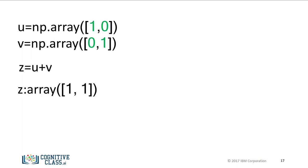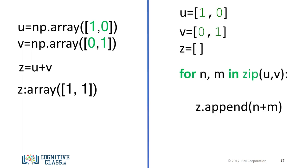The three lines of code to add two lists can be replaced with just one line of NumPy code for vector addition. NumPy also runs much faster, which is important if you have lots of data.